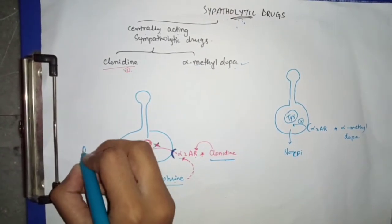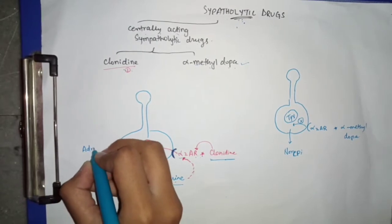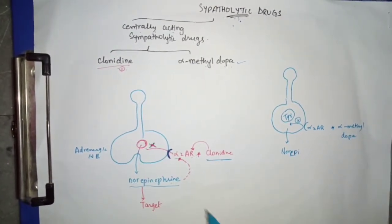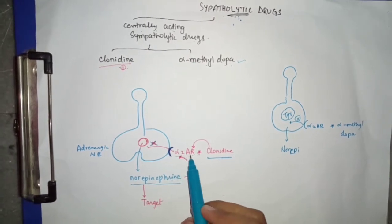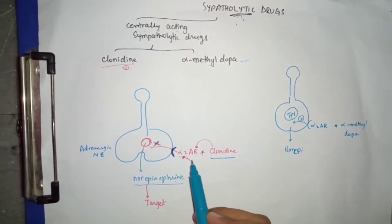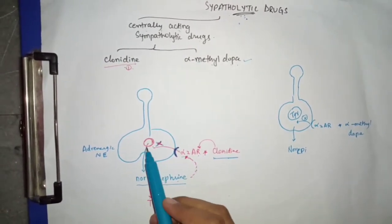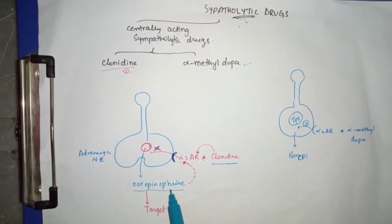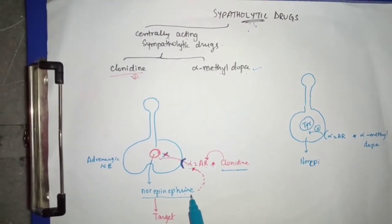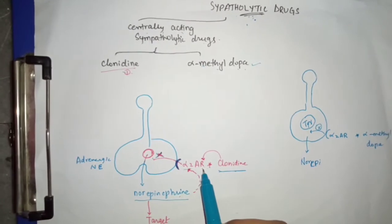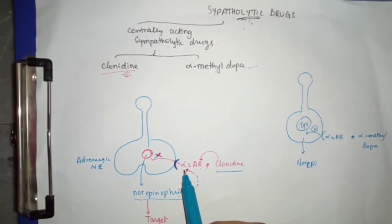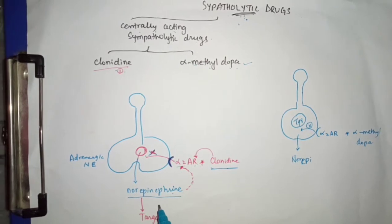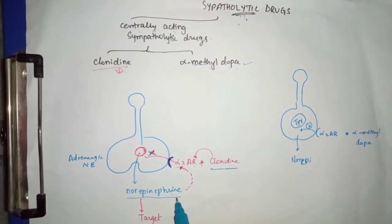These are adrenergic nerve endings, and they have alpha-2 adrenergic receptors. When norepinephrine is released from the nerve ending, it stimulates these alpha-2 adrenergic receptors, and the alpha-2 receptor then inhibits further release of norepinephrine. This is an example of auto-inhibition.